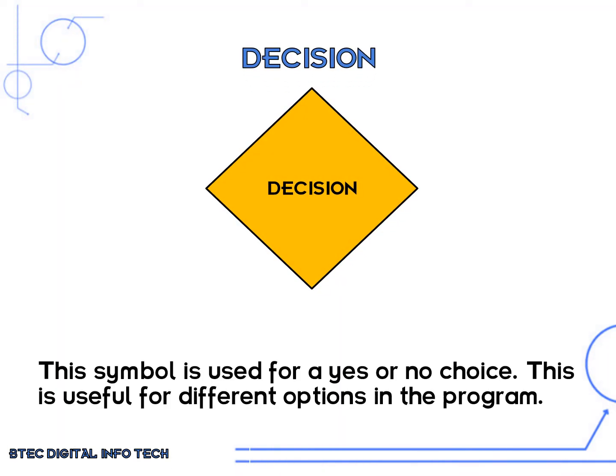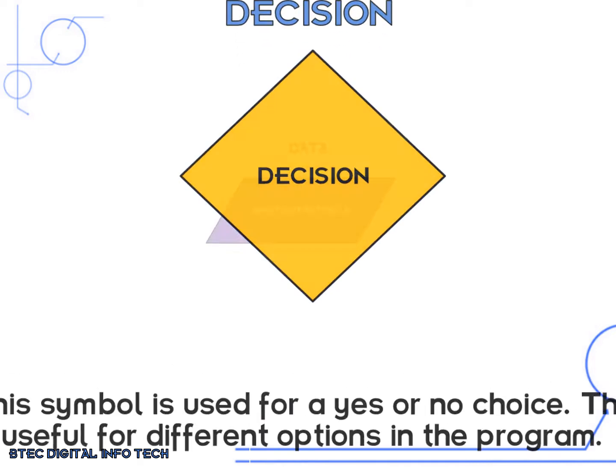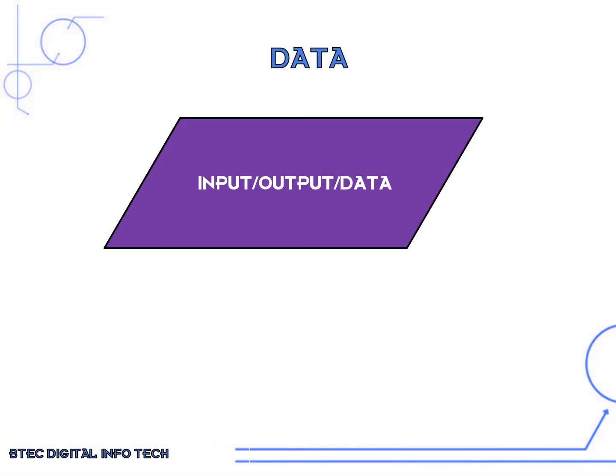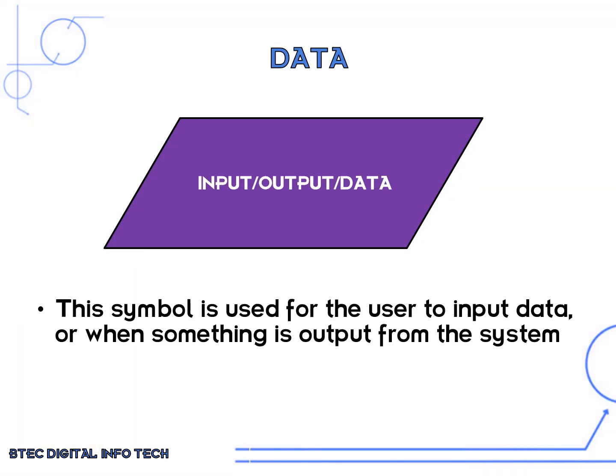The decision symbol is used for a yes or no choice. Whenever there is any sort of option in the program, the decision symbol needs to be used. The data symbol is used to show data — it is usually some sort of input, output, or where data is stored.